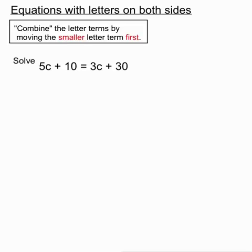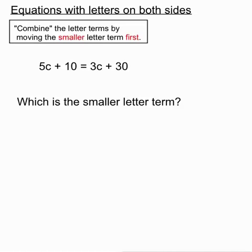Here's our first example. Solve 5c plus 10 equals 3c plus 30. Obviously there are letters on both sides. We first decide which is the smaller letter term. There's a 5c term and a 3c term. The smaller letter term in this case is the 3c term.